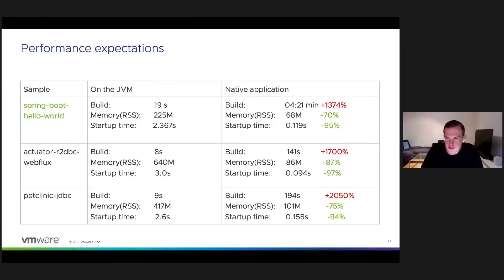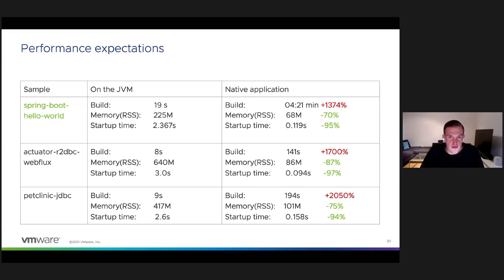The build duration for native images is really high compared to the JVM. I did a comparison before the session: the native image build was around 40 times slower than the JVM build. For this simple app, the JVM build was 90 seconds, but the native image build was four minutes. If your application already takes several minutes to build on JVM, that's a serious productivity problem. On the other side, the native application consumes more than three times less memory and the startup time is only about five percent of the JVM startup time — a great improvement for a serverless runtime.